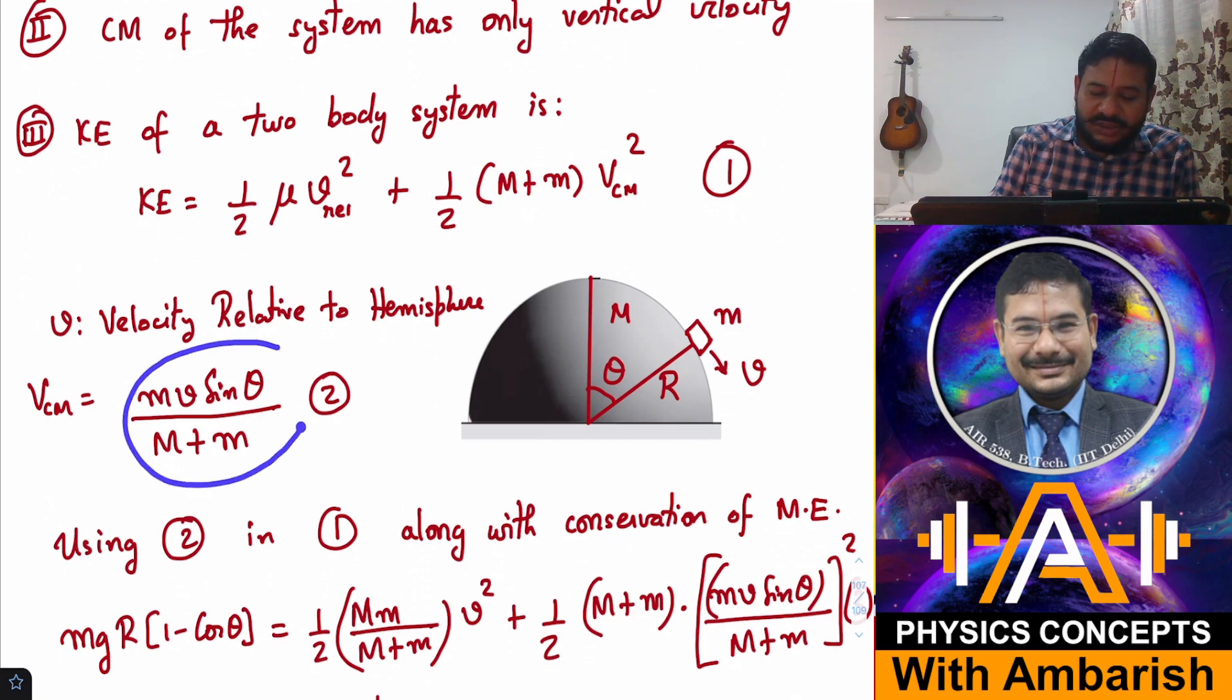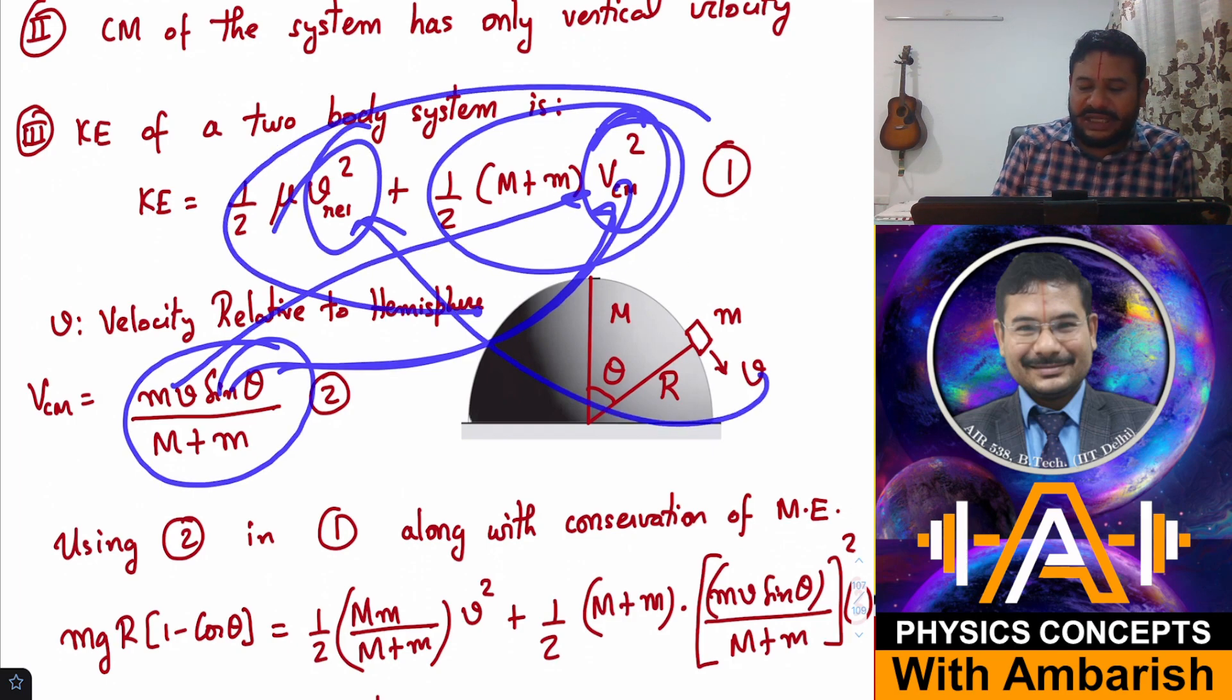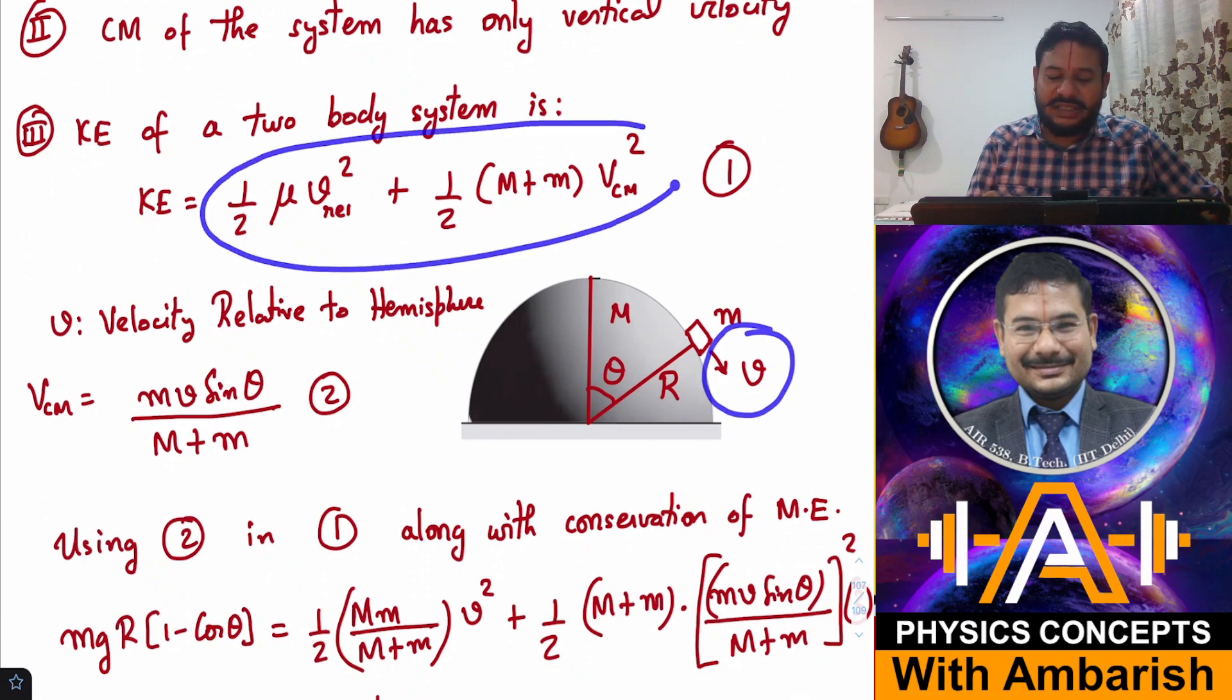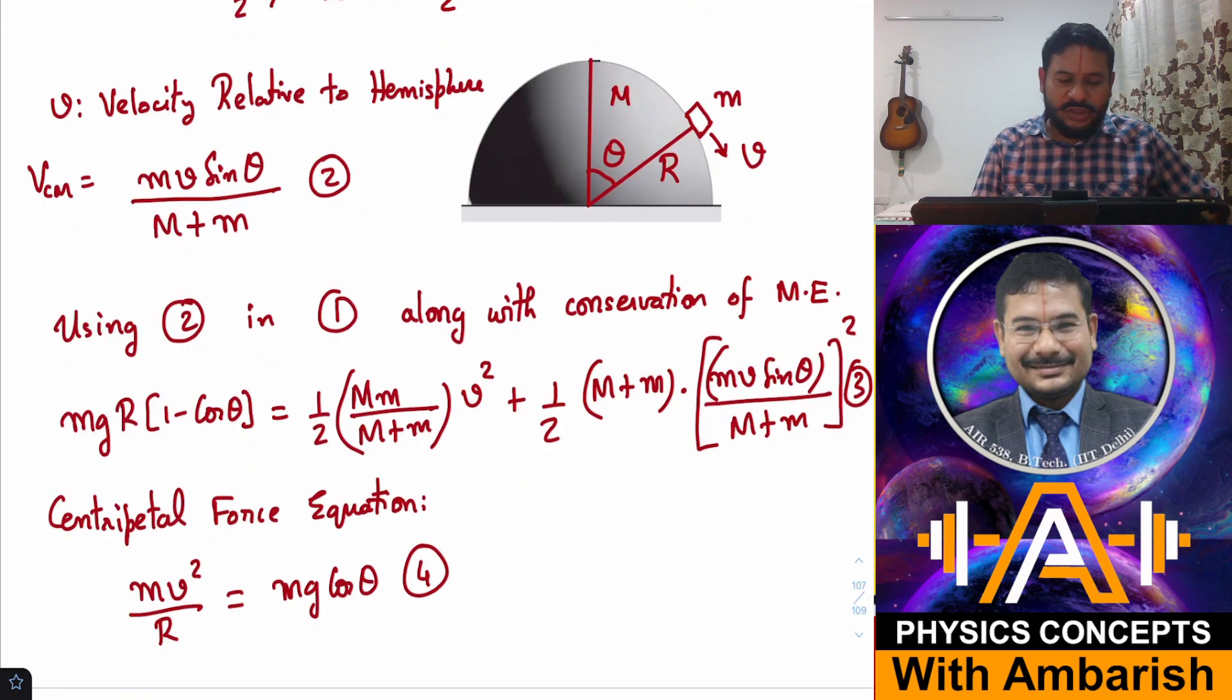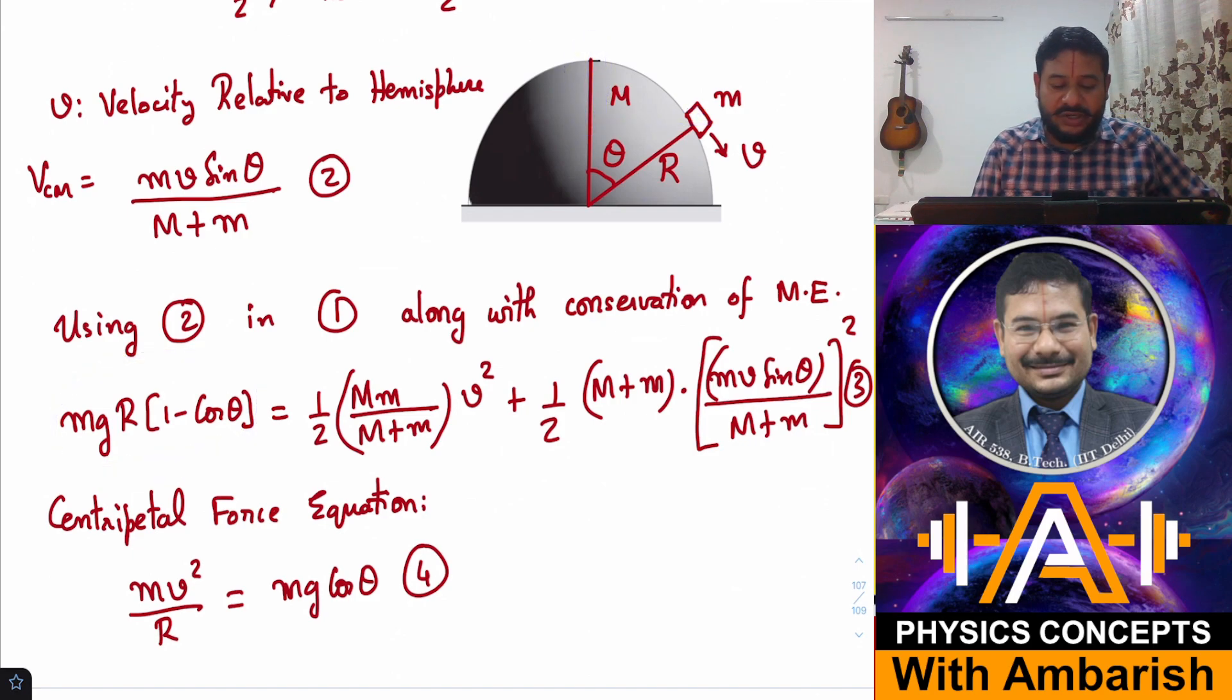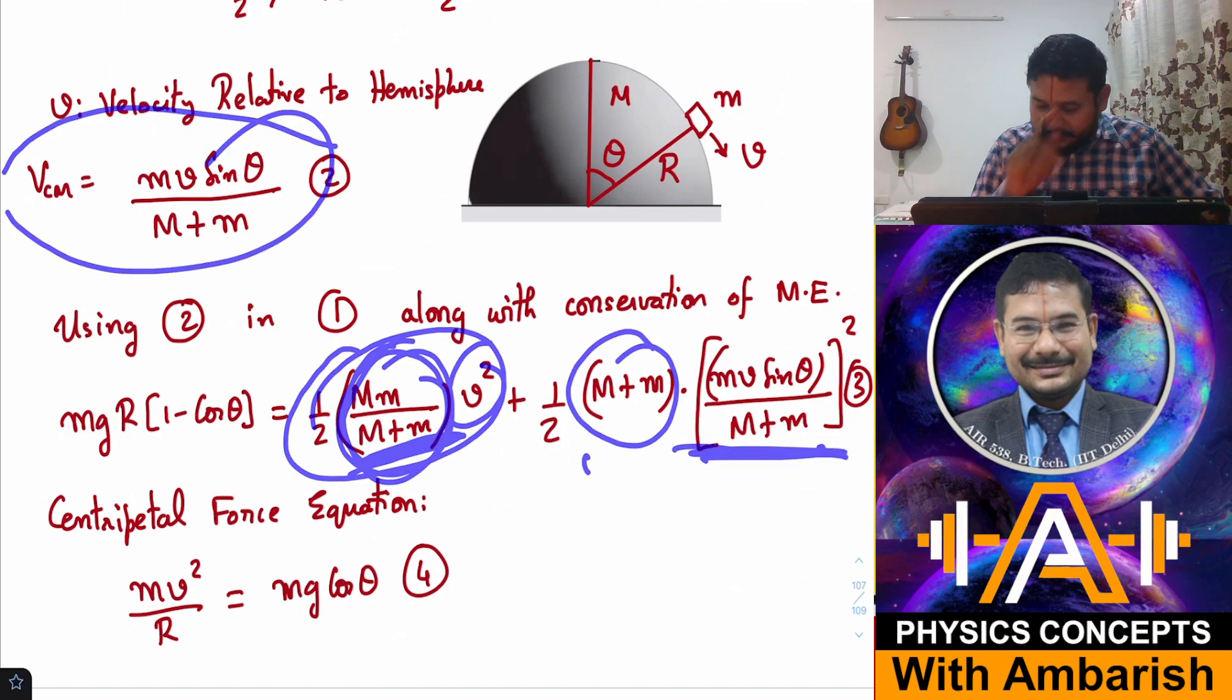I can use equation 2 in this equation for V_CM, and V_rel is also just V. So the entire kinetic energy is expressed in terms of the relative velocity variable. That's how I intelligently reduced one variable. Using this equation and using conservation of mechanical energy, mgR(1 - cos θ) equals half mu V squared plus half (M+m) V_CM squared. The loss in height is R(1 - cos θ). This is one equation.